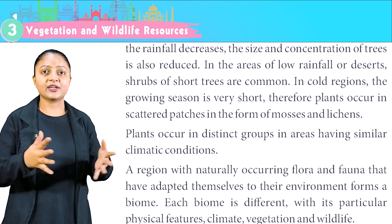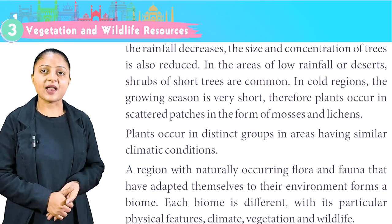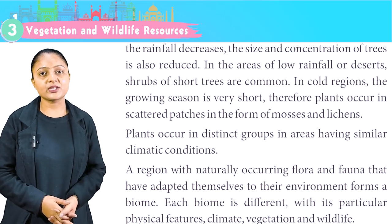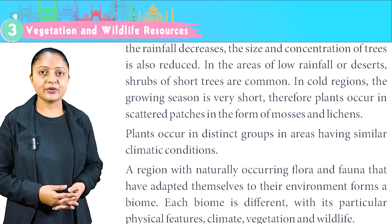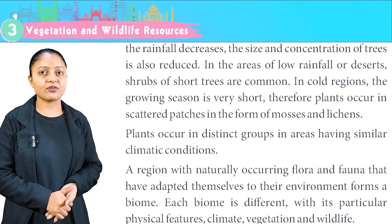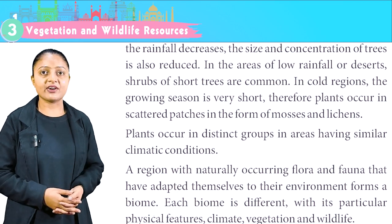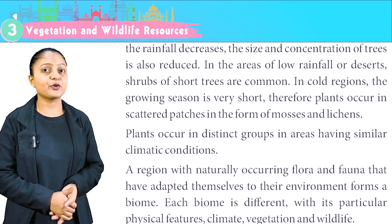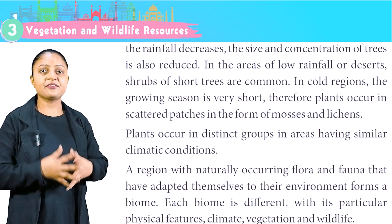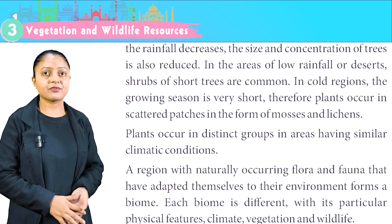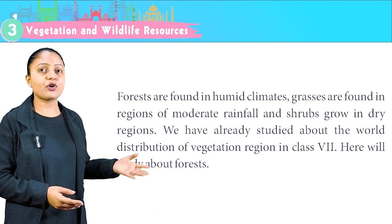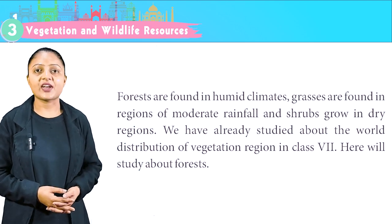In cold regions, the growing season is very short. Therefore, plants occur in scattered patches in the form of mosses and lichens. Plants occur in distinct groups in areas having similar climatic conditions. A region with naturally occurring flora and fauna that have adapted themselves to their environment forms a biome. Each biome is different, with its particular physical features, climate, vegetation and wildlife. Forests are found in humid climates, grasses in regions of moderate rainfall, and shrubs grow in dry regions.